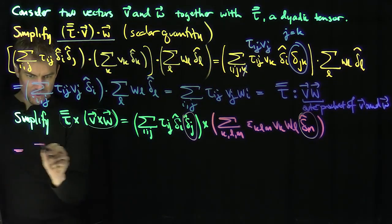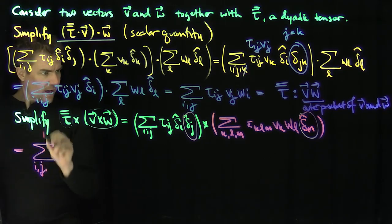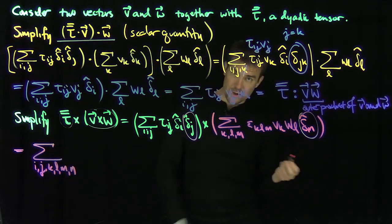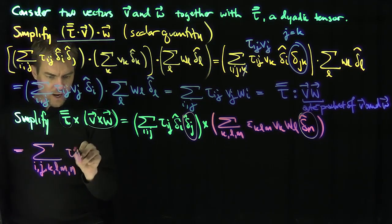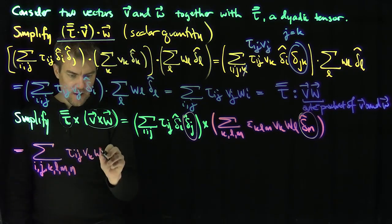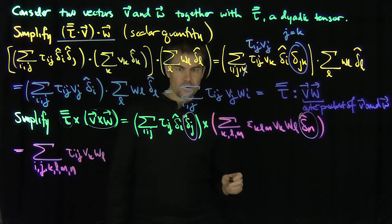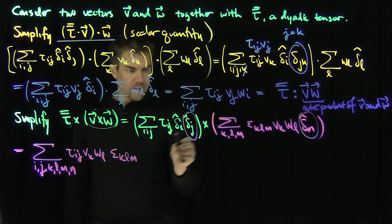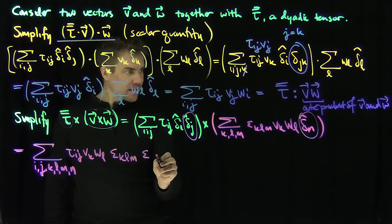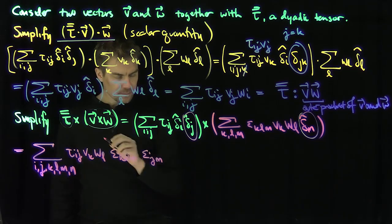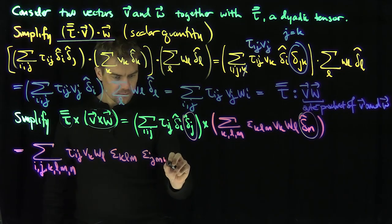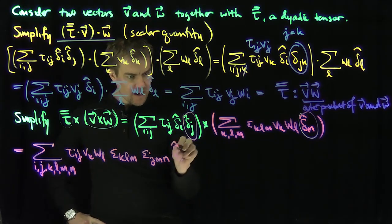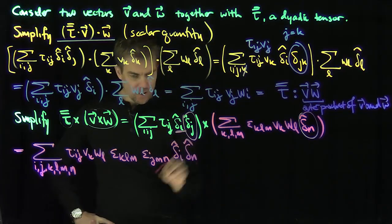We have a six-index sum — which is exactly why we develop Einstein notation, so we don't have to keep writing all these sums. The expression is the sum over i, j, k, l, m, n of tau_ij V_k W_l epsilon_klm. Then delta-j-hat cross delta-m-hat gives epsilon_jmn, and the remaining basis vectors are delta-i-hat and delta-n-hat.